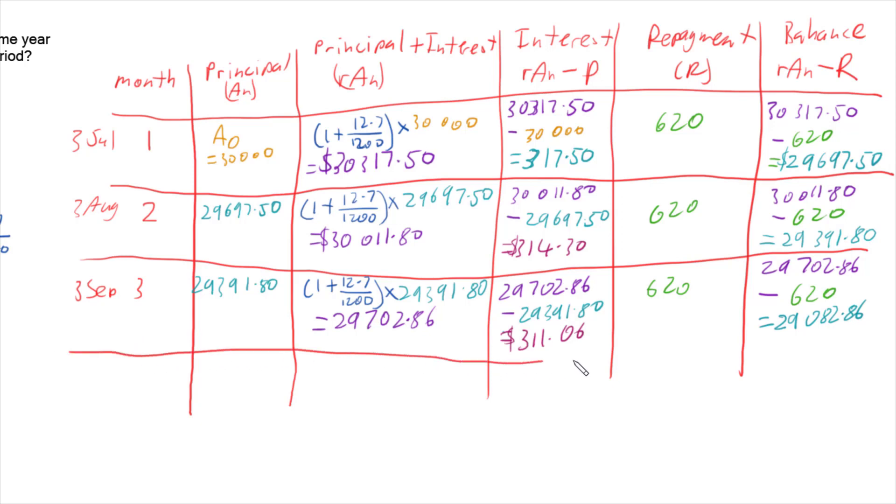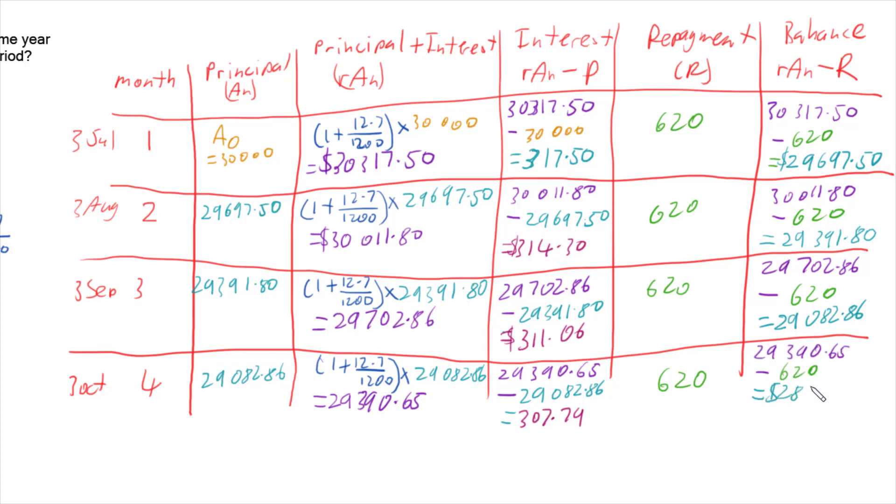We can then do the same for the fourth month, which will get us to the 3rd of October. So again, we bring down our balance, add on our interest minus our principal to work out what that interest is, make a repayment and that gives us our balance. So at the end of the 3rd of October, we have $28,770.66.